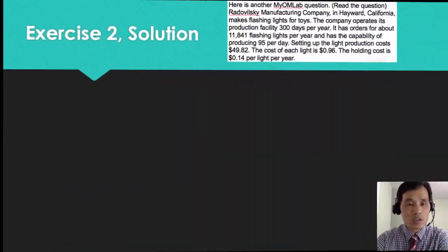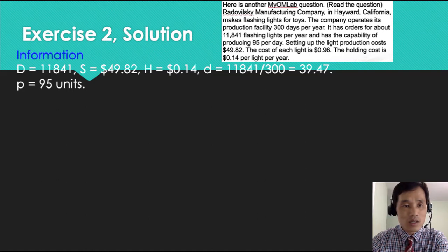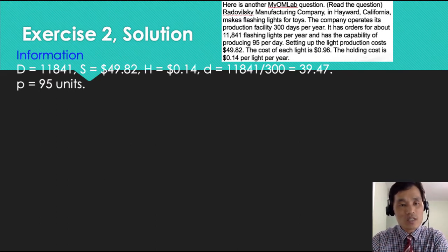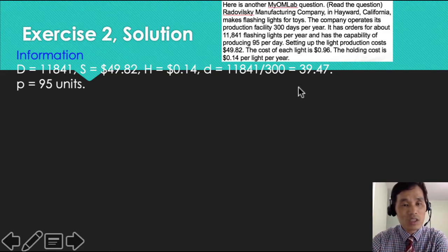Here's the question. Again, you want to find out all the information that you can. The annual demand is 11,841 and setup cost is $49.82. Each handling cost is $0.14 per item annually. Daily demand is annual demand 11,841 divided by 300, so it's 39.7. Daily production is given as 95 per day.